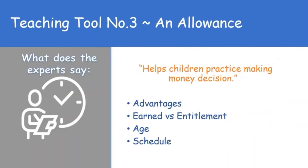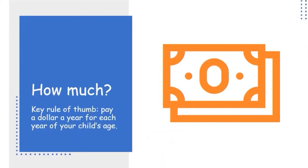The third teaching tool is an allowance. Financial experts do agree that children should get an allowance. An allowance is giving your child money so that they can touch it, feel it, and actually make some decisions — they have money that is their own that they can spend on things they want, with your guidance of course. Give your child an allowance on a consistent day of the week, and figure out the amount by age: give them a dollar per year. So if a child is 12, they receive $12 every week.